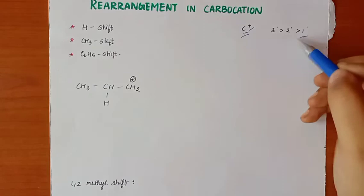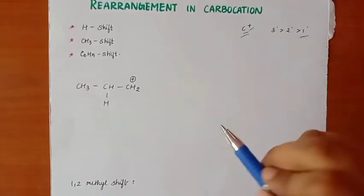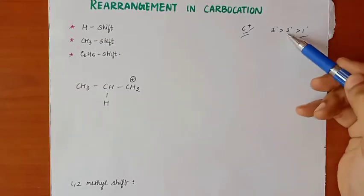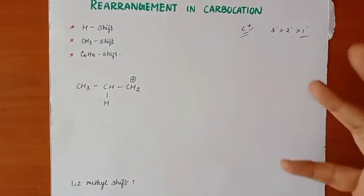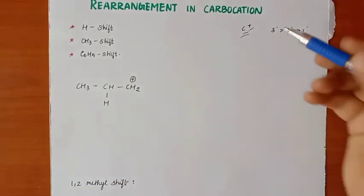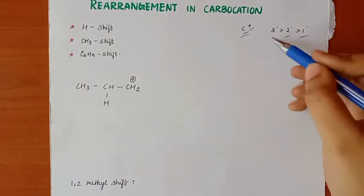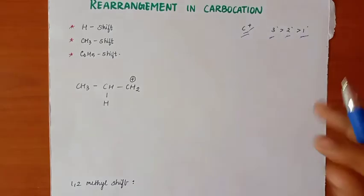If we have a 1° carbocation, then it is less stable than a 2° or 3° carbocation. When compared to 1°, 2° and 3° are more stable. A 3° carbocation is the most stable of all.